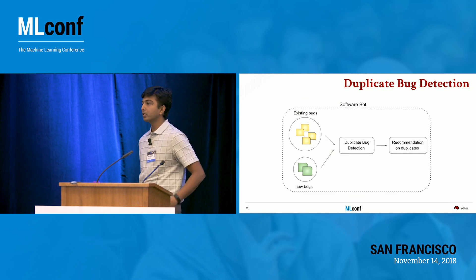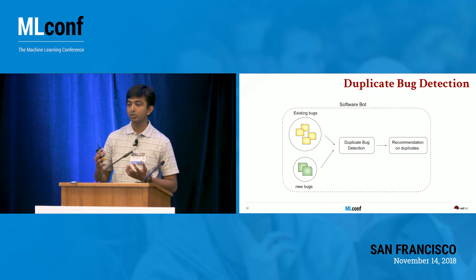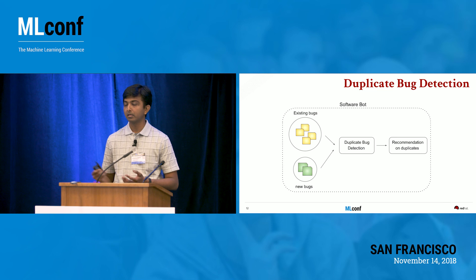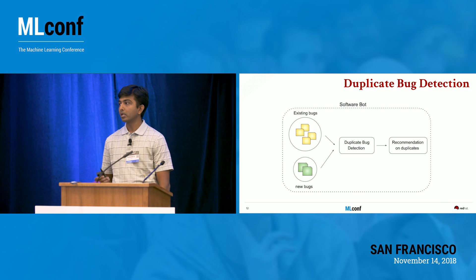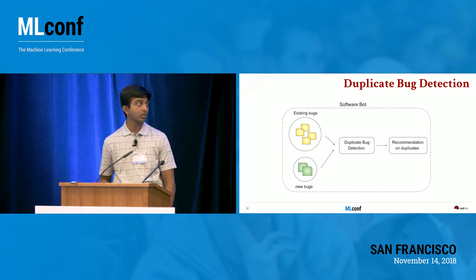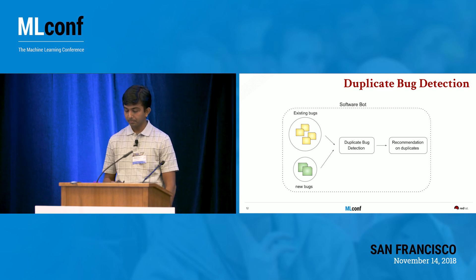In practice, we convert this whole process into a software pipeline: you have the existing bugs, a new bug comes in, you run it through the duplicate detection engine, and get recommendations on duplicates. This can also be used as an assisted machine learning technique where developers use it during their weekly bug scrum meetings.